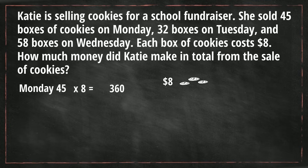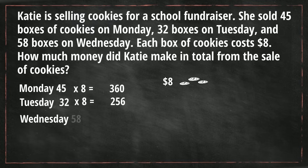Then the next day, she sold 32 boxes. So 32 times 8 — remember, the 8 is the price of a box of cookies — and that's $256. And then on Wednesday, she sold 58 boxes, and 58 times 8 is $464.